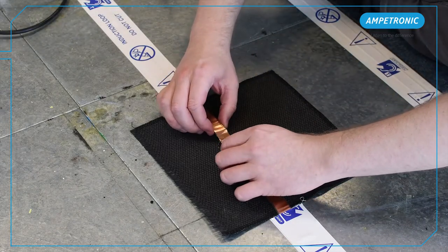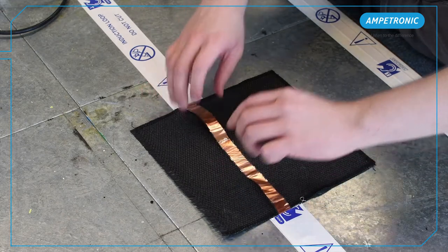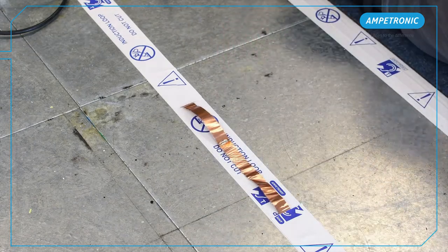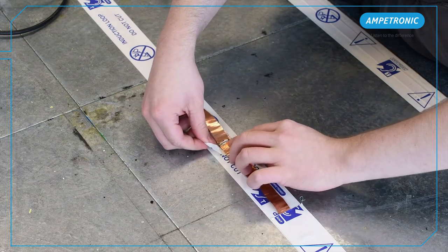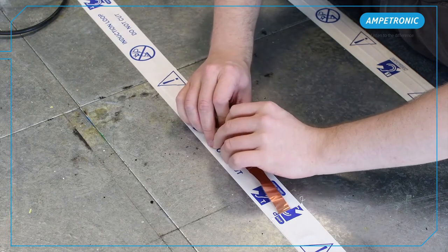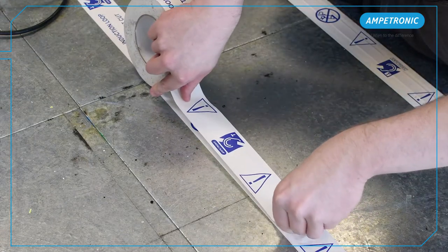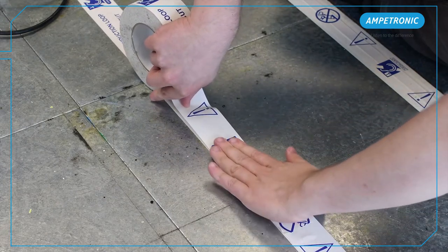Once you've got the join, you want to feel around for any sharp edges to make sure that a sharp bit of solder isn't going to cut through your insulation tape. Then apply some insulation around the joint. Try to keep the joint neat and flat to reduce the chance of a bump under the floor covering. It is now good to go under the floor.